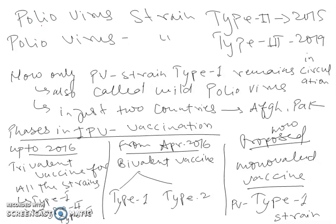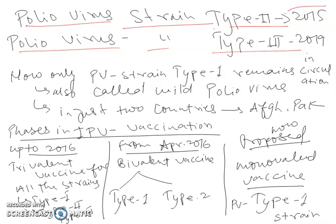We were discussing that there are three strains of poliovirus: poliovirus strain type 1, type 2, and type 3. Out of which poliovirus strain type 2 was declared eradicated way back in 2015, and now poliovirus strain type 3 has been declared eradicated in 2019, because its last case was spotted way back in 2012 in Nigeria.